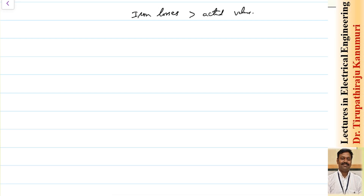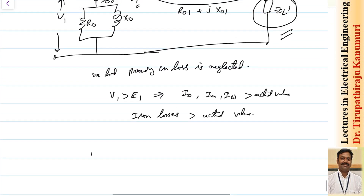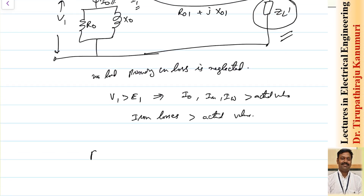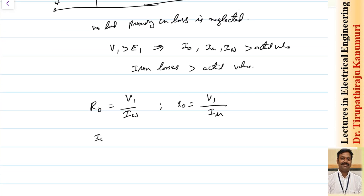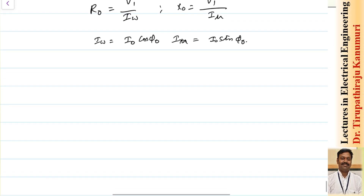From the approximate equivalent circuit, R0 = V1/Iw and X0 = V1/Iμ. The value of Iw can be obtained as I0·cos(φ0) and the magnetizing component Iμ = I0·sin(φ0), where I0 is the vector sum of Iμ and Iw.